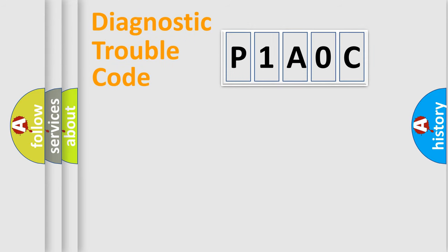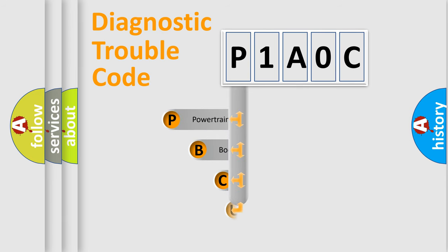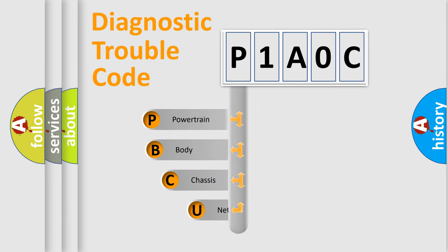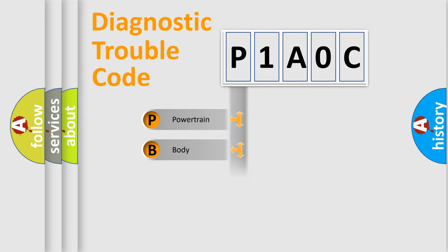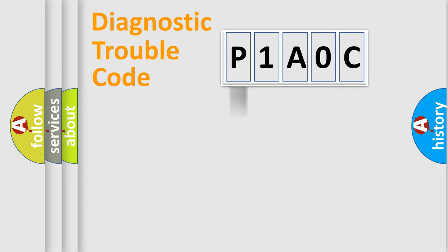First, let's look at the history of diagnostic fault code composition according to the OBD2 protocol, which is unified for all automakers since 2000. We divide the electric system of automobile into four basic units: Powertrain, Body, Chassis, and Network.